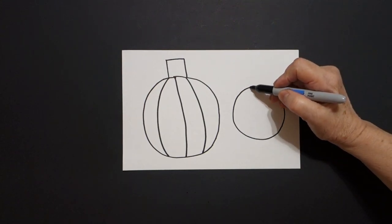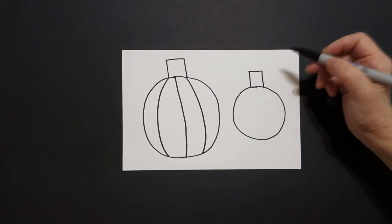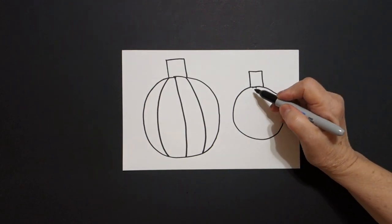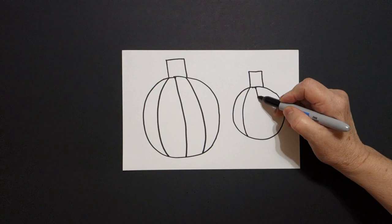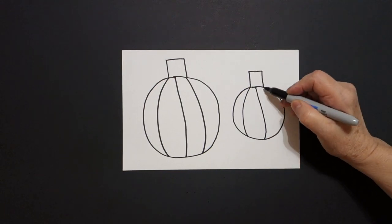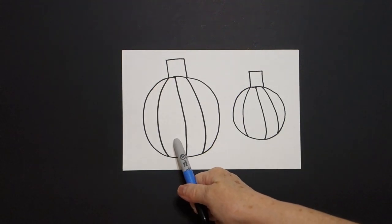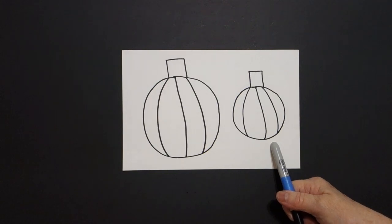I come on top and I draw one, two, three straight lines, connect. In fact, that's a square. I come inside and I draw one, two, three curved lines. This is a big pumpkin and this is a little pumpkin.